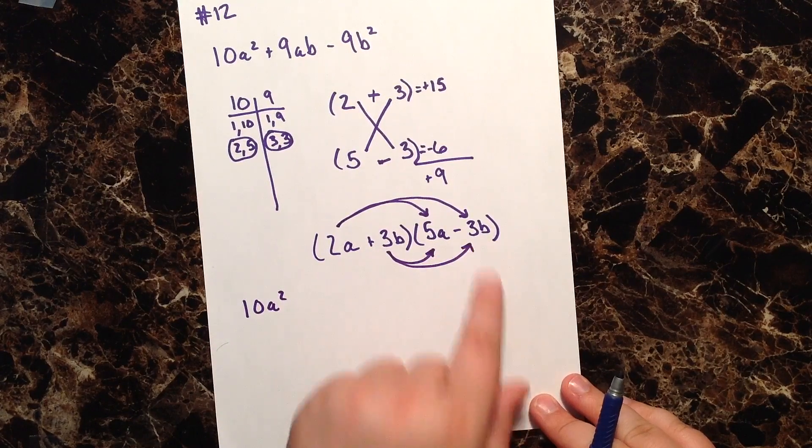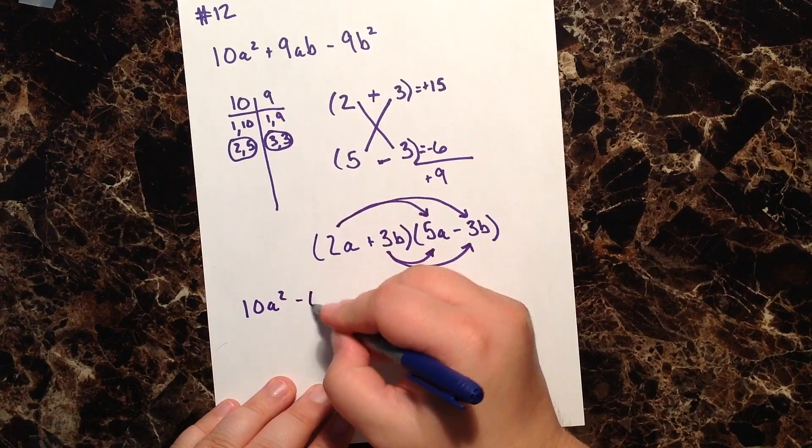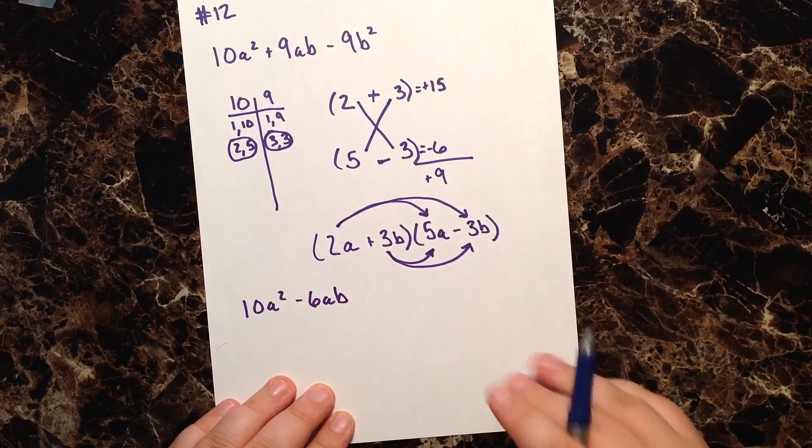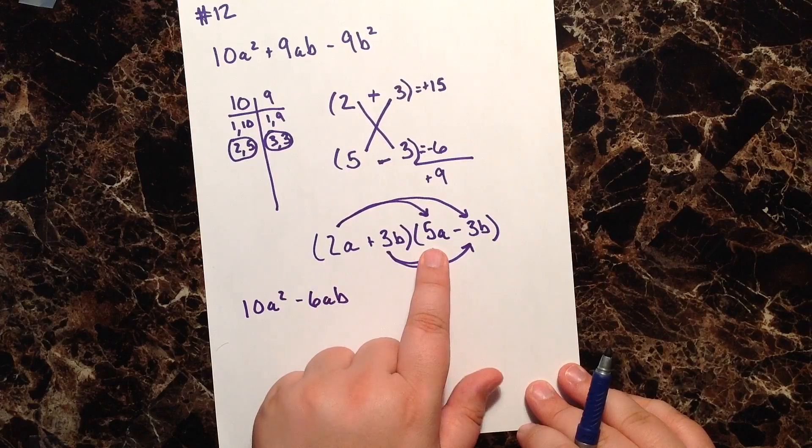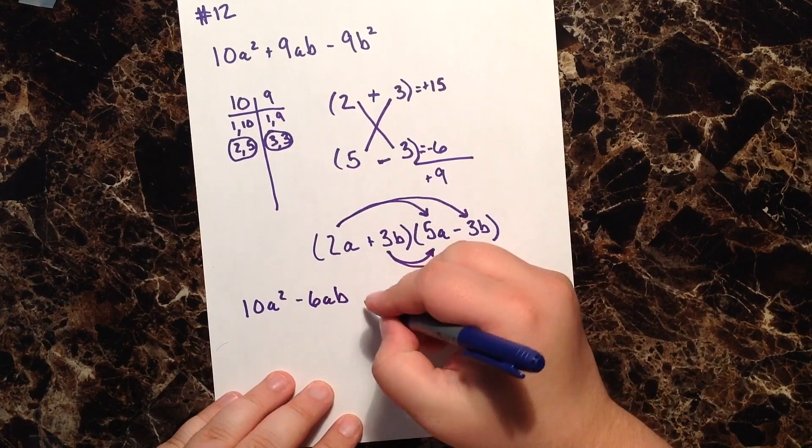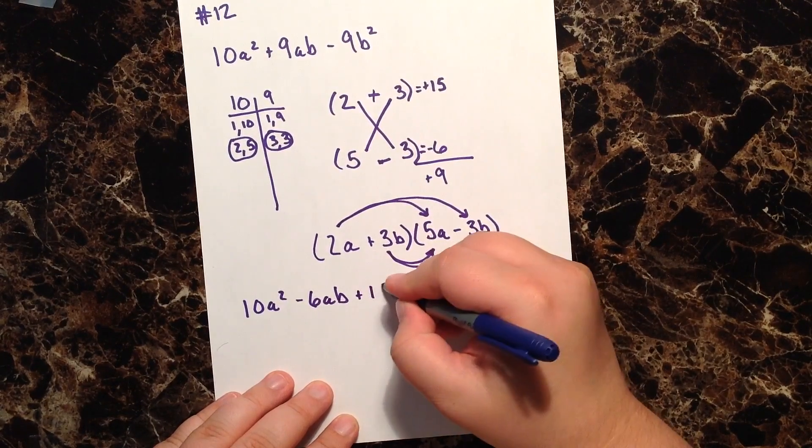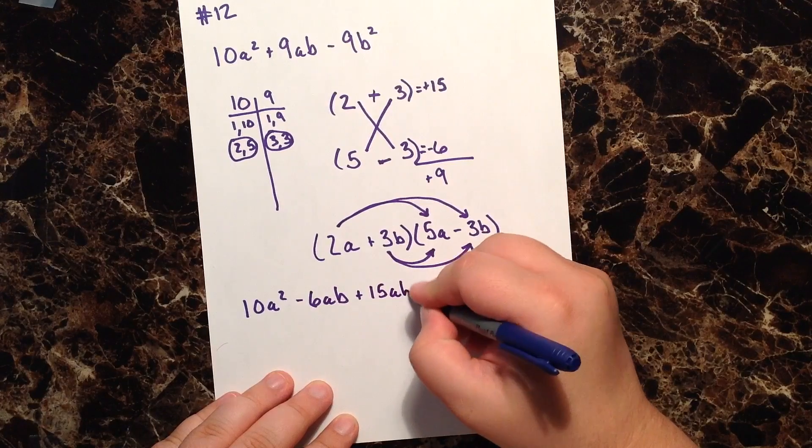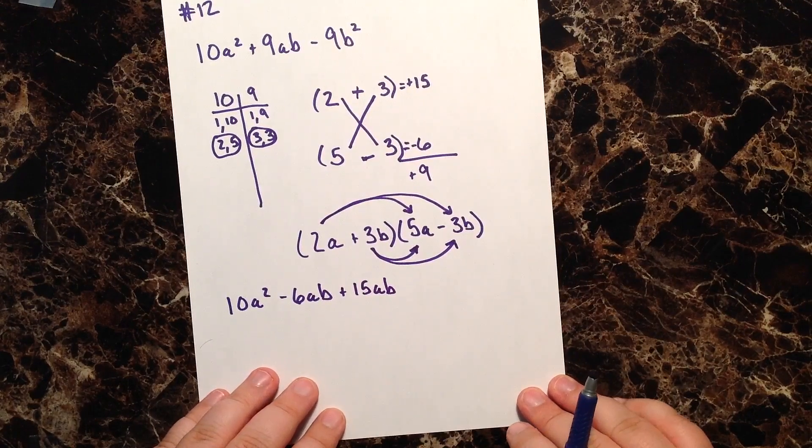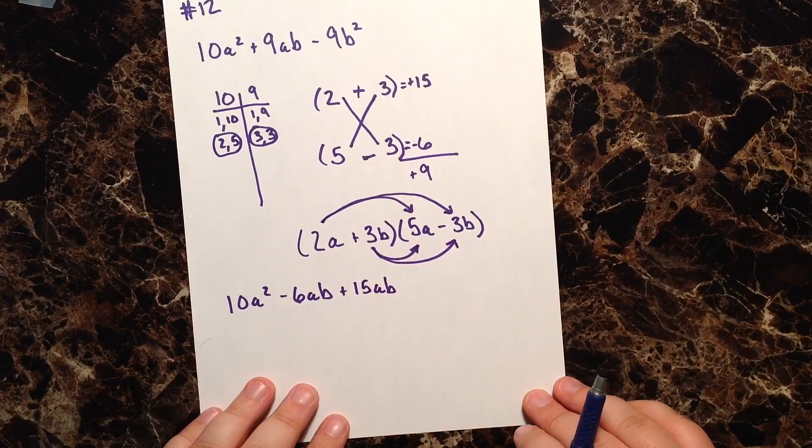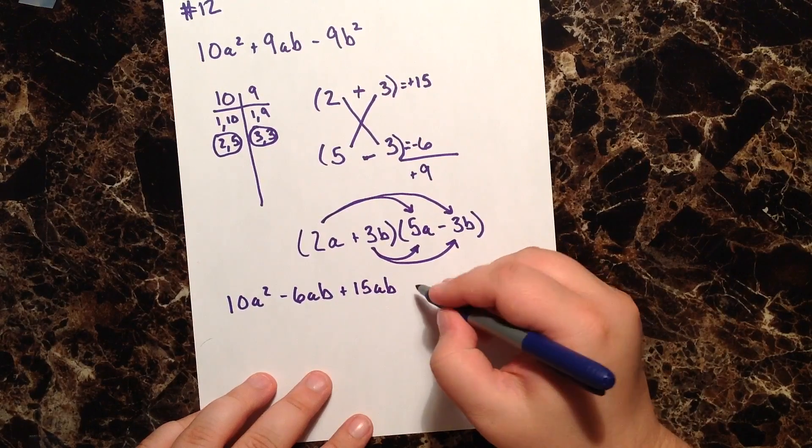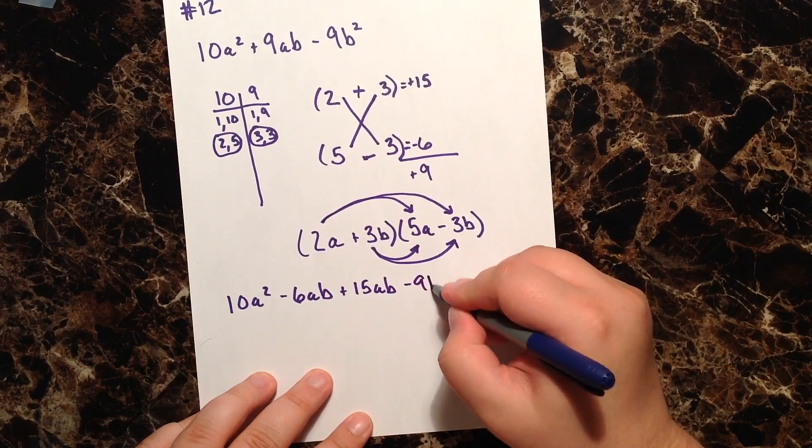2a times negative 3b is negative 6ab. Positive 3b times positive 5a gives me a plus 15ab. And then lastly, 3b times negative 3b. When we multiply those together, we get a negative 9b².